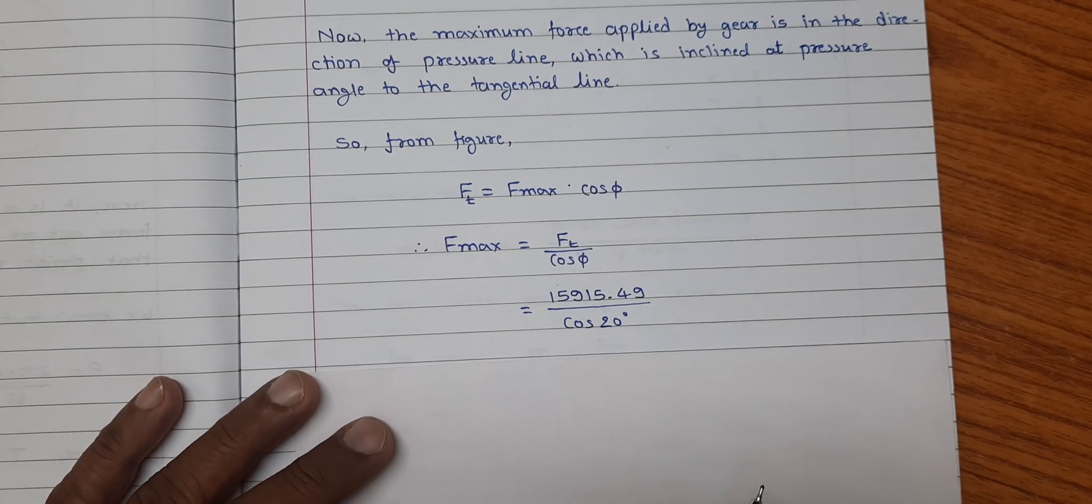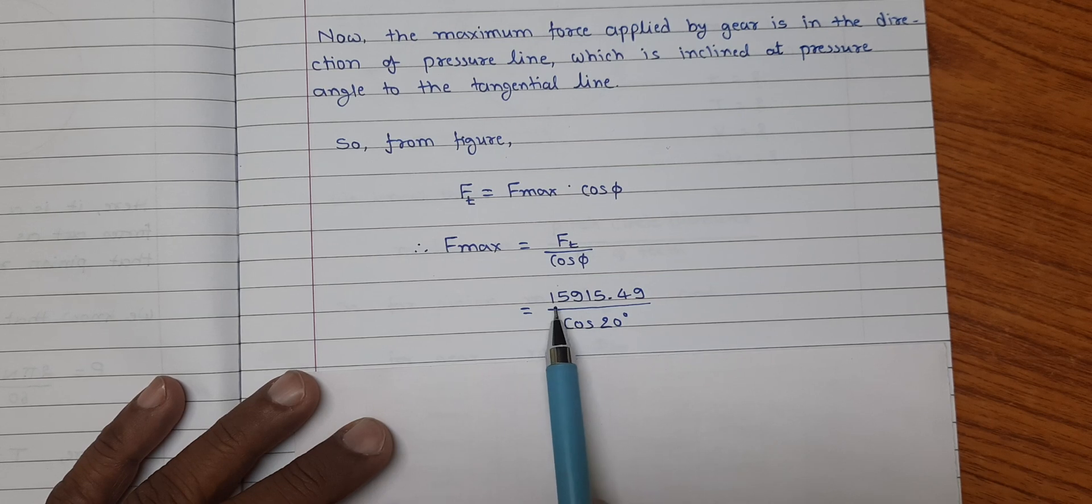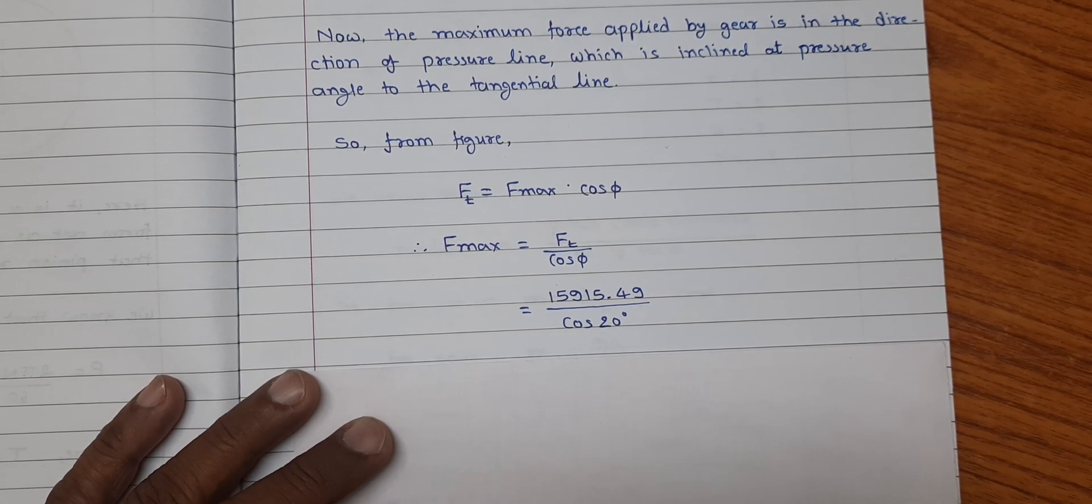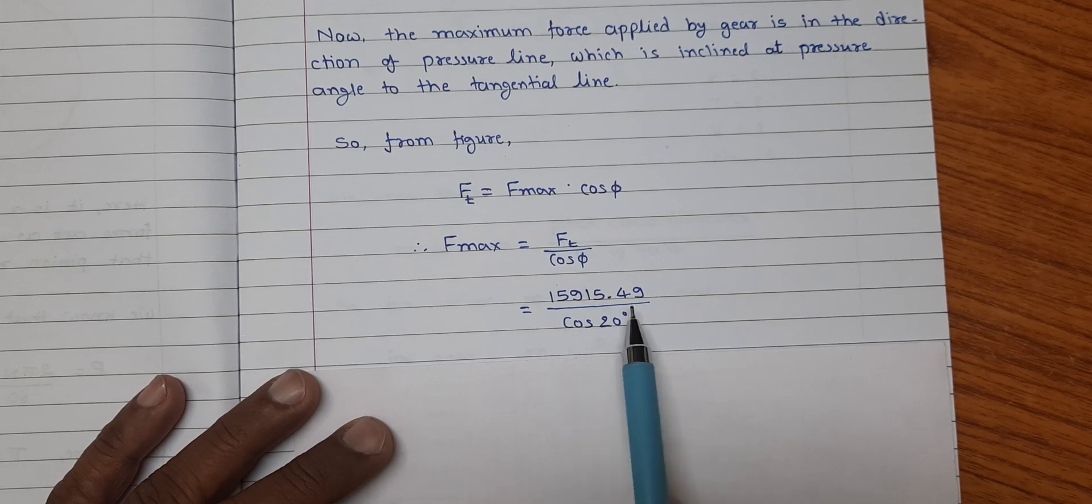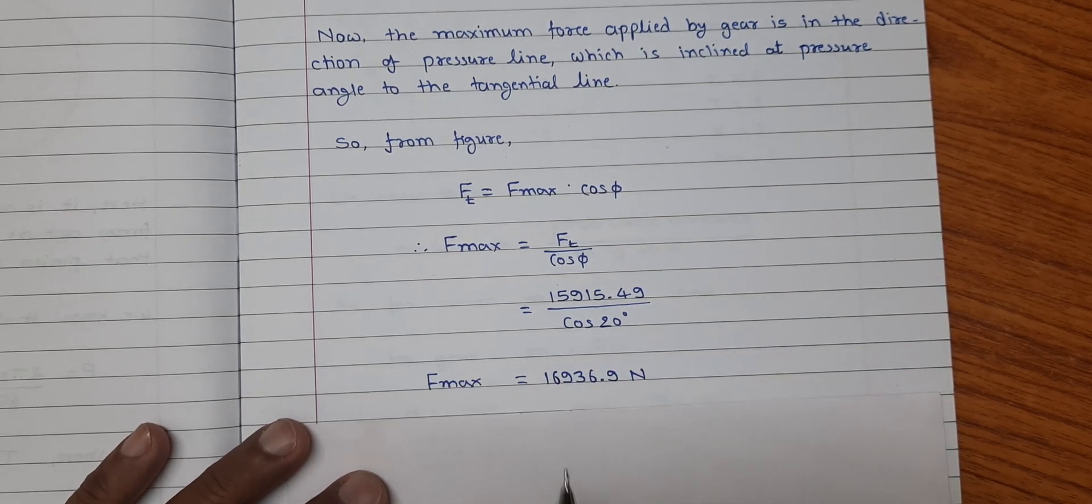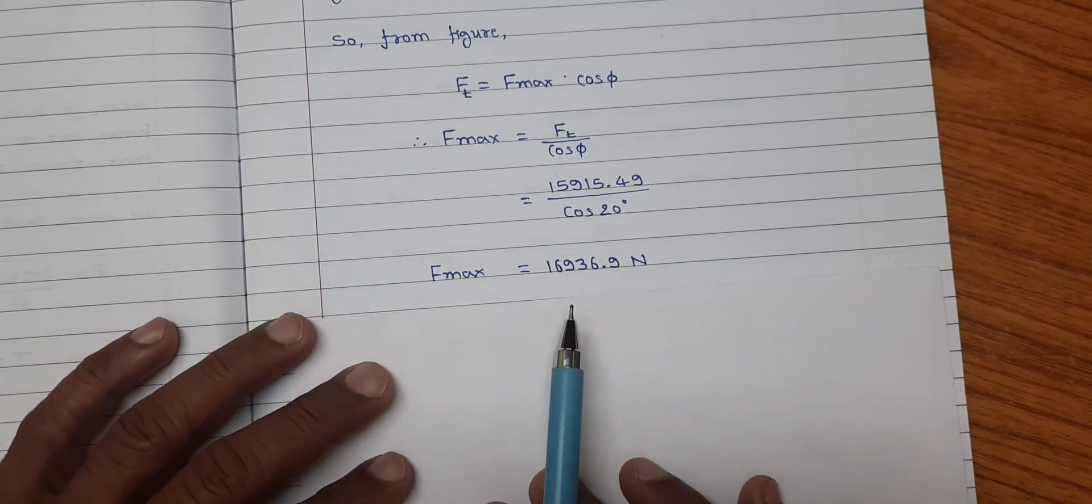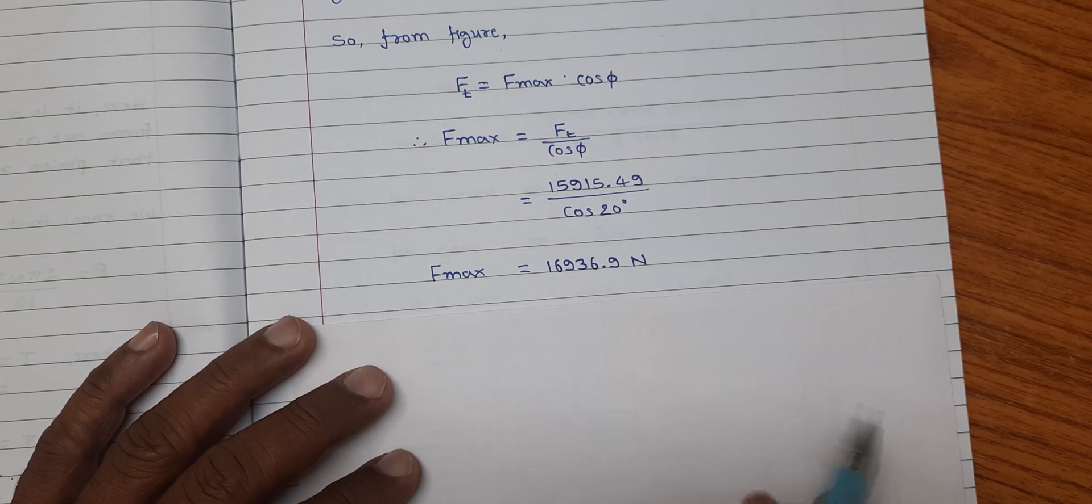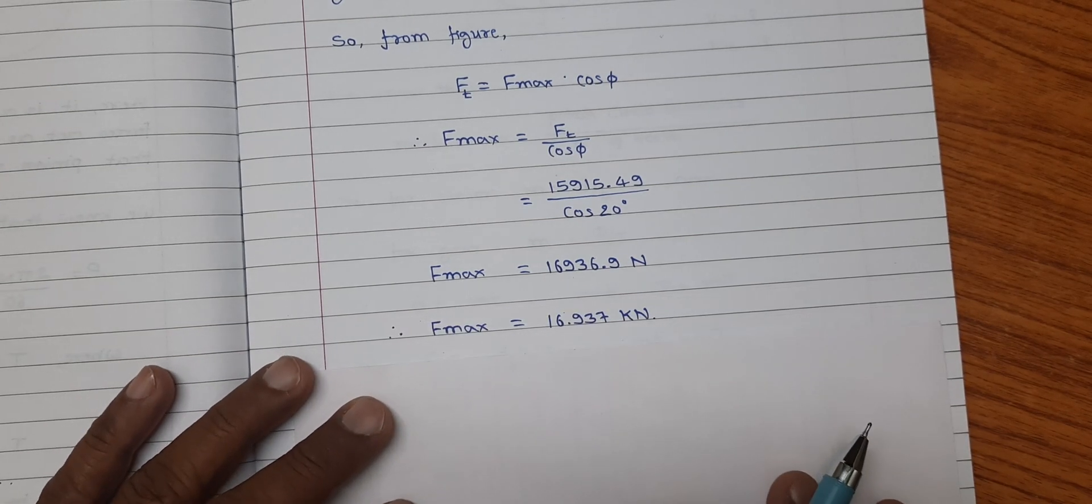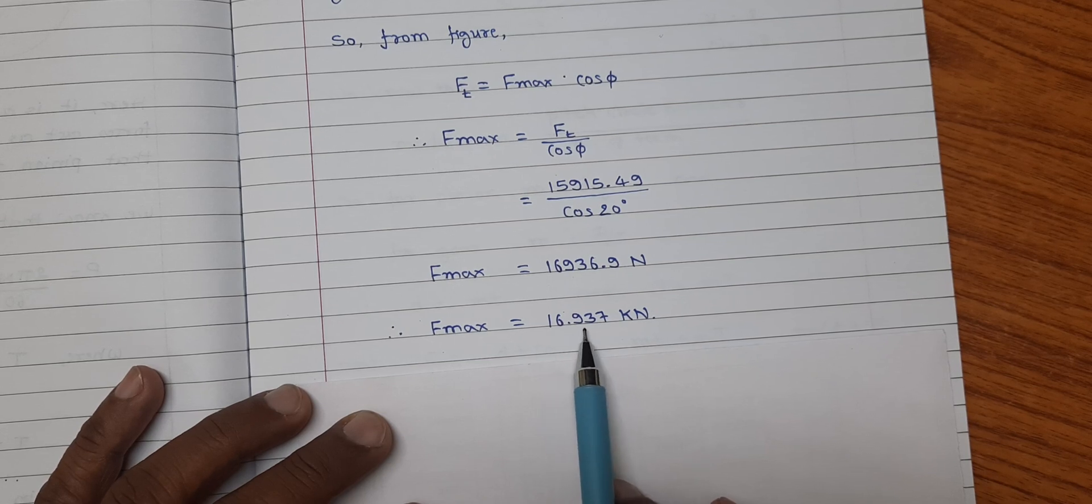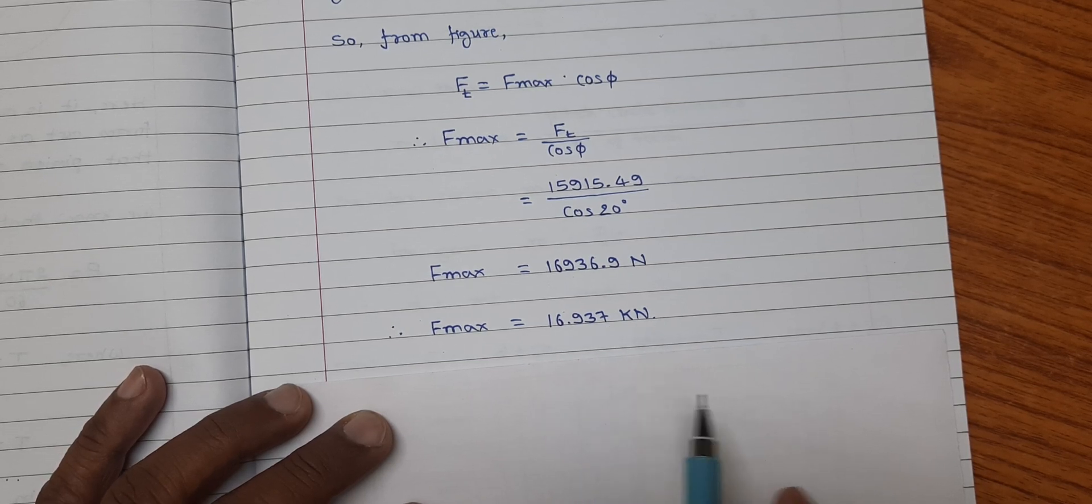Substituting the values, ft which is calculated 15915.49 divided by cos of 20 degree, and we found f max is equal to 16936.9 newton. So rewriting, f max is equal to 16.937 kilo newton.